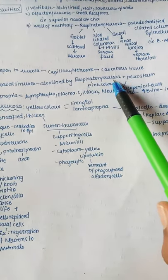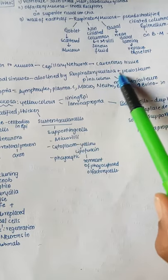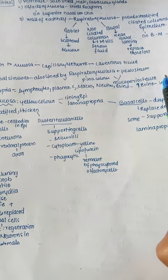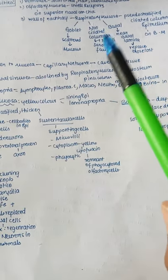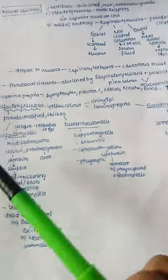The respiratory mucosa is pink in color. The respiratory mucosa along with the periosteum is known as muco-periosteum, combining mucosa and periosteum.